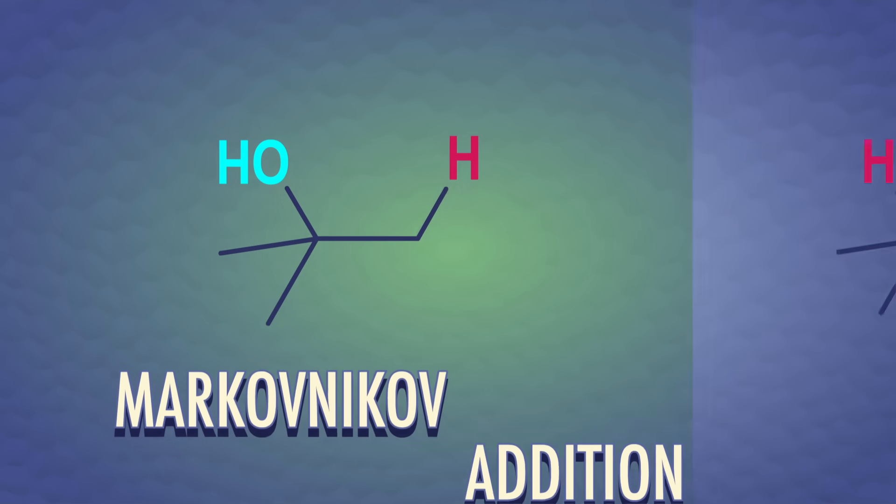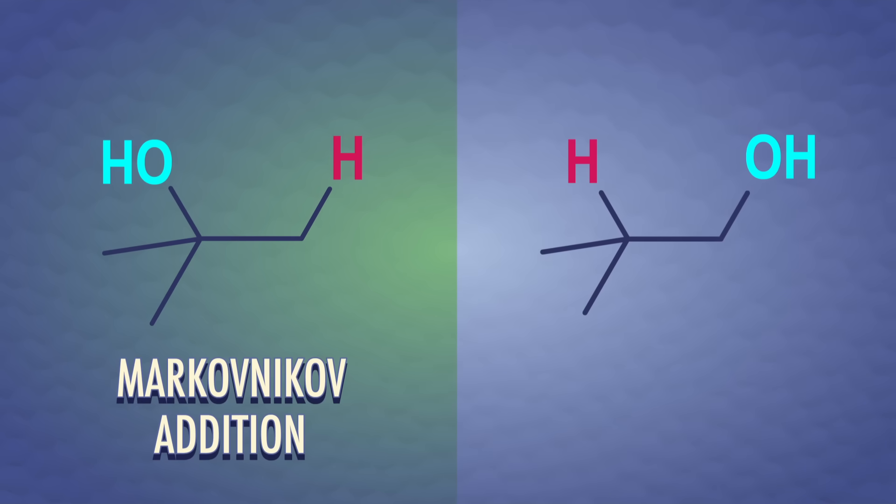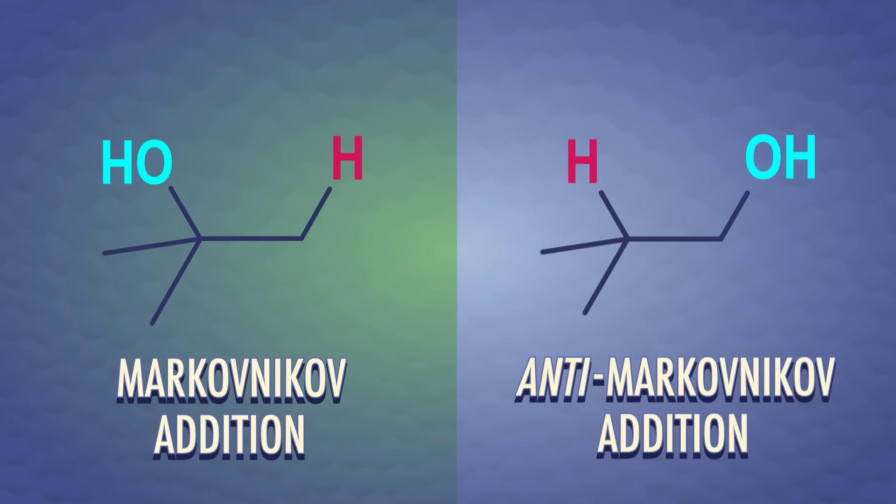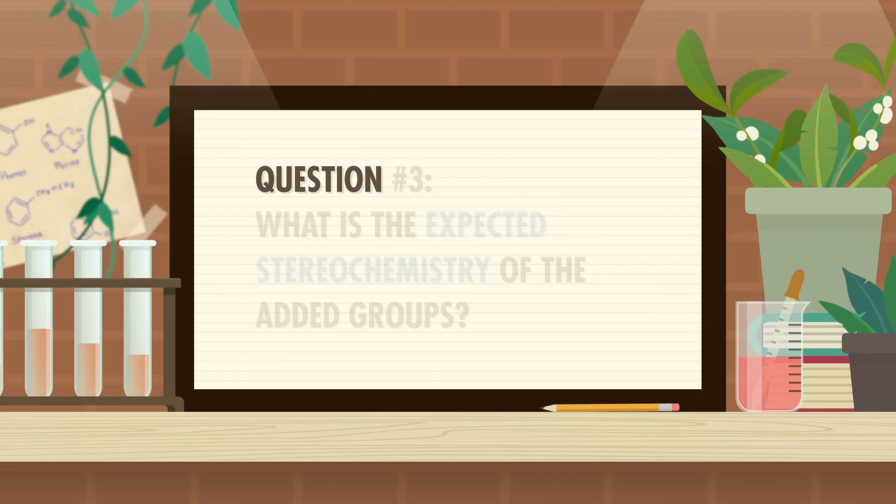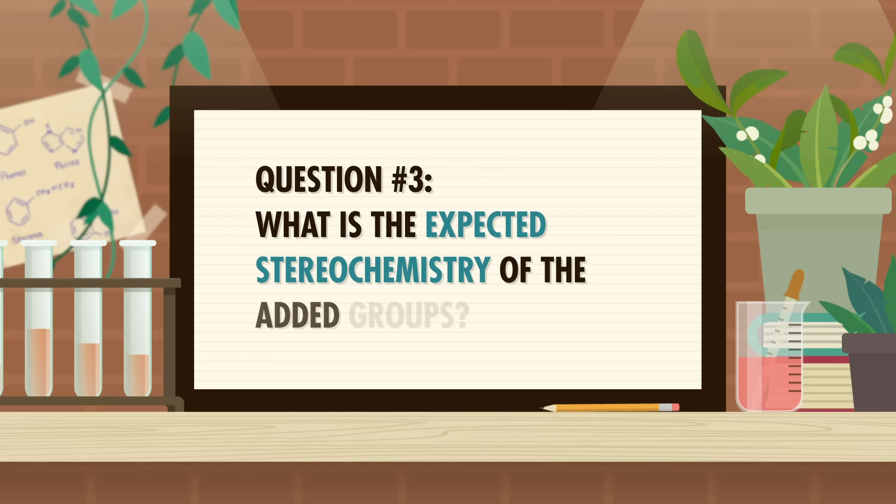With some special reactants, these groups can add in the opposite orientation. If a proton adds to the carbon with less hydrogens, it's anti-Markovnikov addition. In general, this question is defining a reaction's tendency to bond groups to one atom over another in an asymmetrical molecule, a property called regioselectivity. And question number three: What is the expected stereochemistry of the added groups?